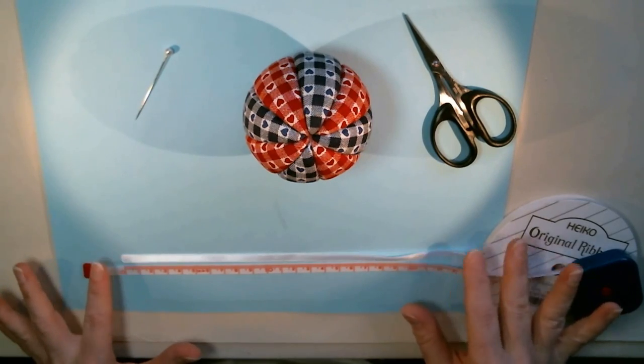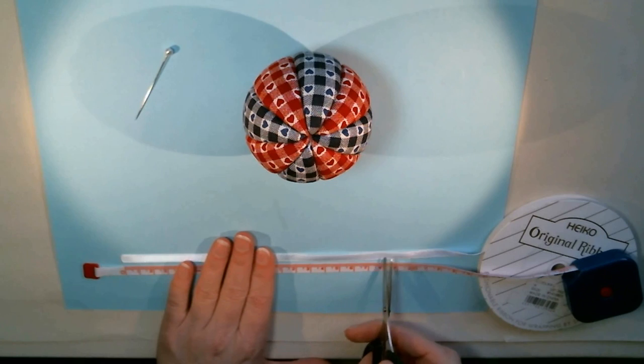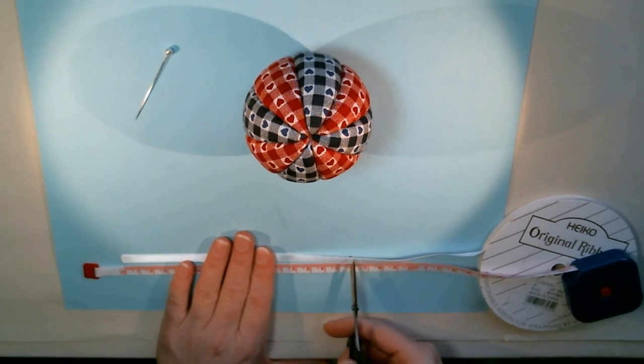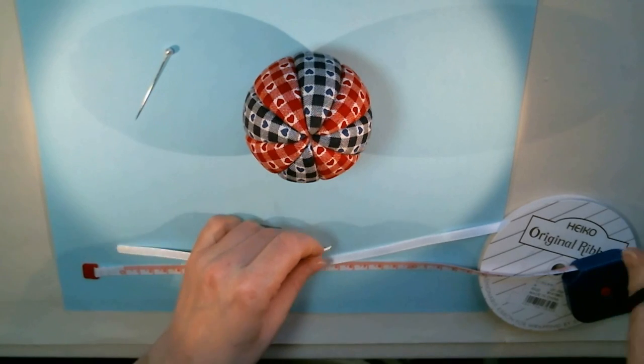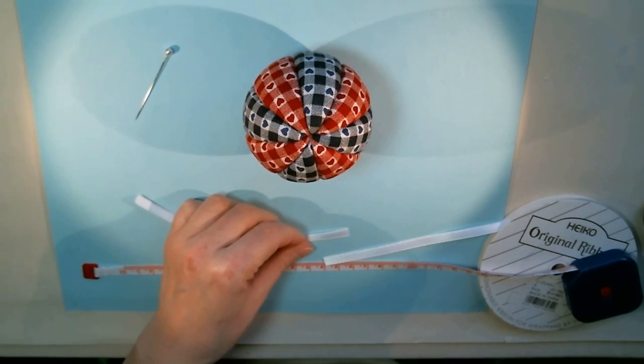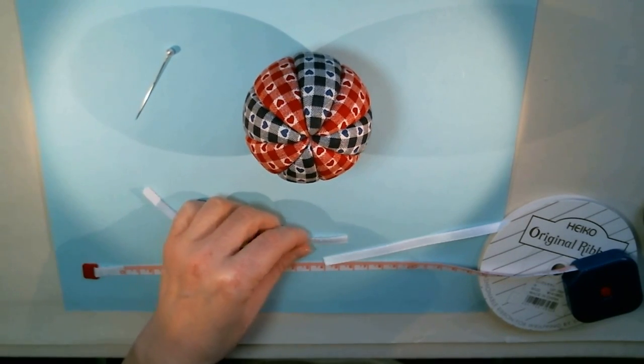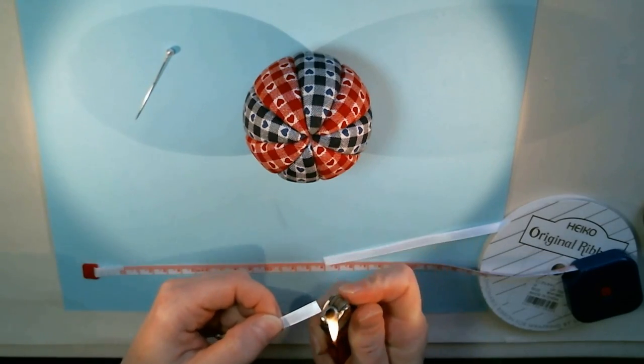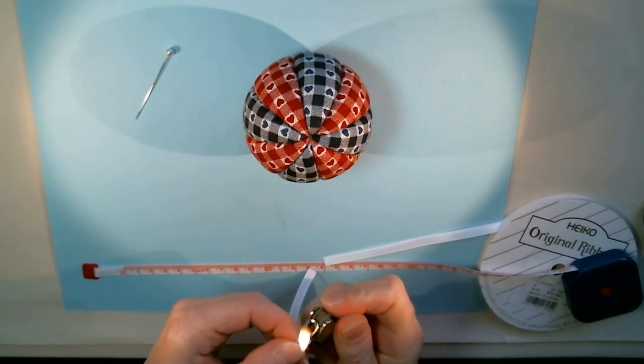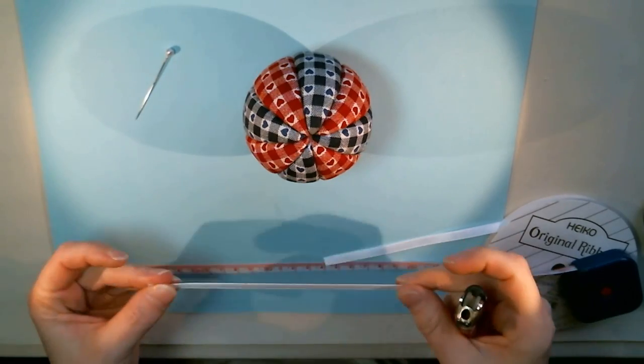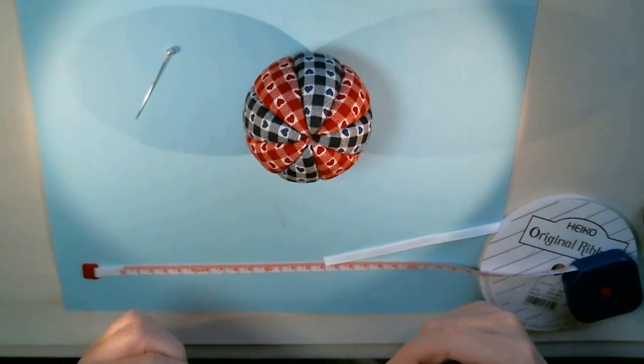Now for seven centimeter diameter balls I like to have a 15 centimeter hanging ribbon. So here I'm just going to cut my hanging ribbon and then I'm going to melt the ends very lightly to prevent fraying. You don't have to melt a lot, just enough to prevent the fraying. So I'm going to set that aside.